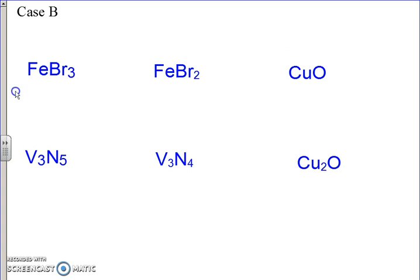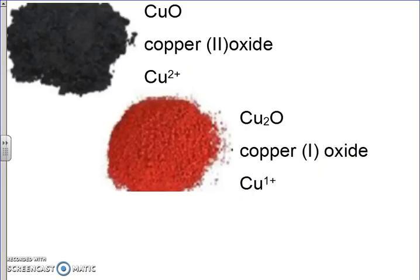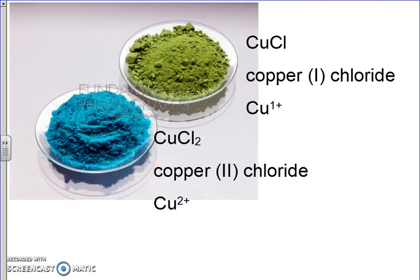In the next problem, we write copper, put parentheses, and write oxide. Here we have one oxygen with a two negative charge, meaning the coppers must provide a two positive charge total, but there are two coppers — so each copper must be a one positive, making this copper(I) oxide. You can see that copper(II) oxide and copper(I) oxide physically look different from each other. Similarly, copper(I) chloride looks completely different than copper(II) chloride.